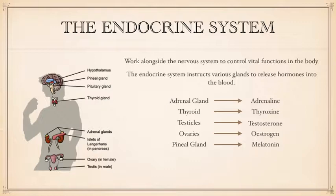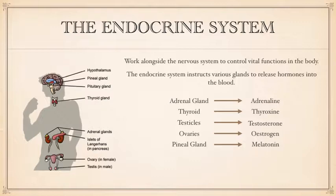You've also got the thyroid gland, which is responsible for producing thyroxin — a hormone that affects cells in the heart, so it increases heart rate. It also increases metabolic rates, which in turn affects growth rates as well. You've got the pineal gland as well, which produces melatonin, which is all about sleep. When melatonin is produced, that's when we start to get sleepy and then we sleep. When melatonin stops being produced, that's when we wake up again.